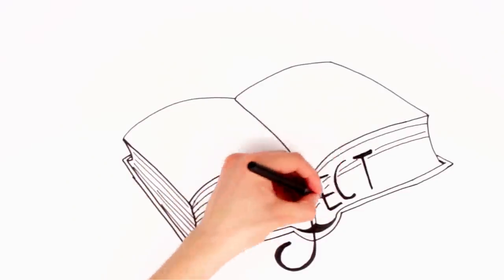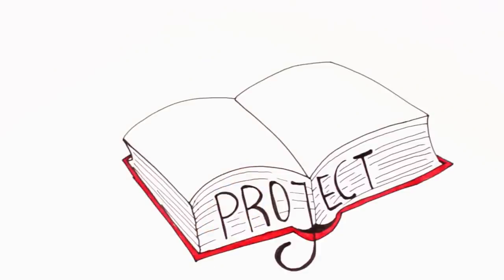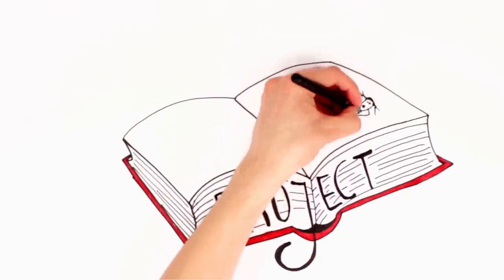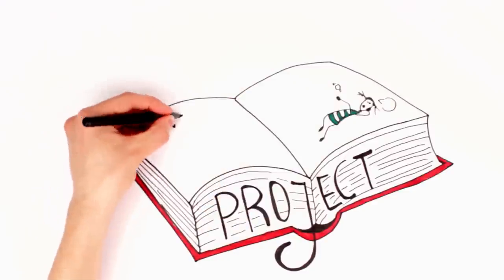When working with young people, it is very important that they come up or at least have a say in what the project is going to be about, who it's for, what form it will take and what the aim is. This will help motivate the participants and make the project more relevant.